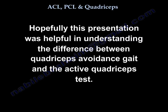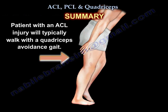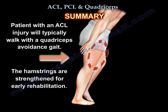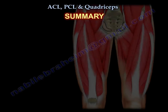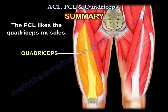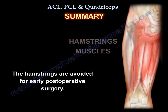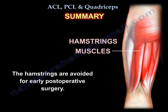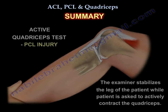I hope this structure is helpful. In summary: the ACL does not like the quadriceps — patients will do quadriceps avoidance gait and use the hamstring for early rehab. The PCL loves the quadriceps — they will use the quadriceps for early rehab, avoid the hamstring post-operatively, and use the quadriceps contraction as a test to demonstrate PCL injury.